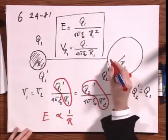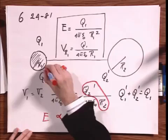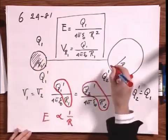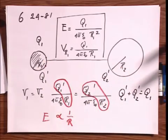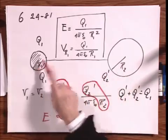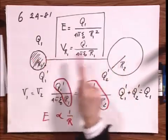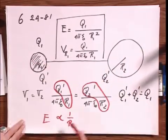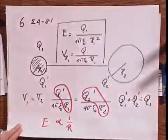And so since R1 is smaller than R2, you will find that the electric field here is stronger than the electric field there because they are equipotentials, because they are connected. But I leave you with that part.